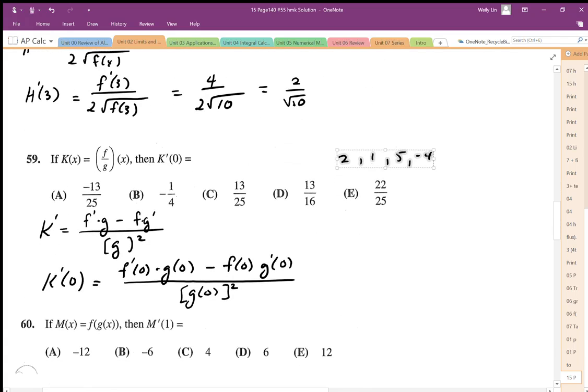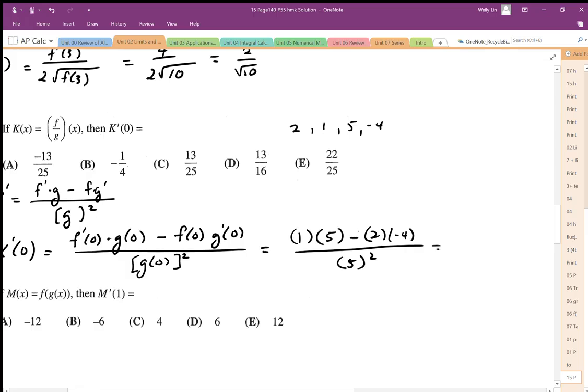So that's my f, f prime, g, g prime. So then I plug those values in. So f prime of 0 was 1, g of 0 was 5, minus f of 0 was 2, and g prime was negative 4. And that's all divided by g squared, so g was 5 squared. And so simplifying this expression, it's going to be 5 minus negative 8, so it's going to be 5 plus 8 over 5 squared. So the answer is C.